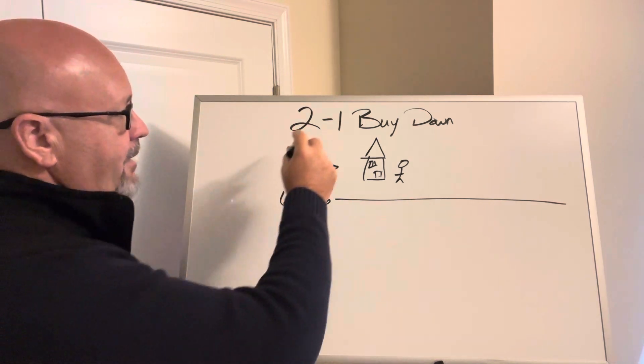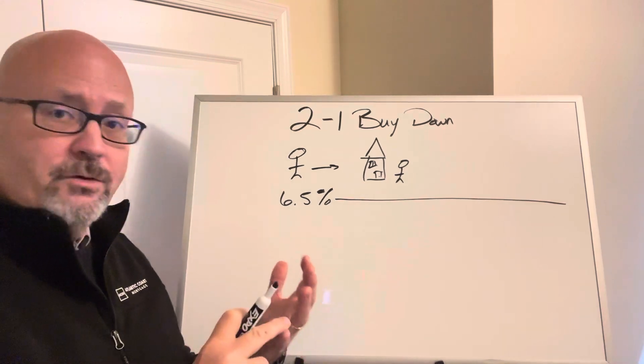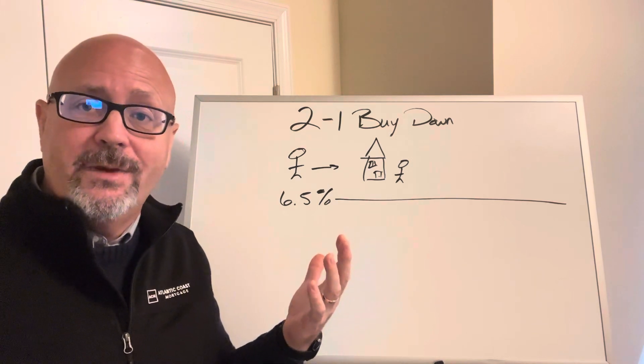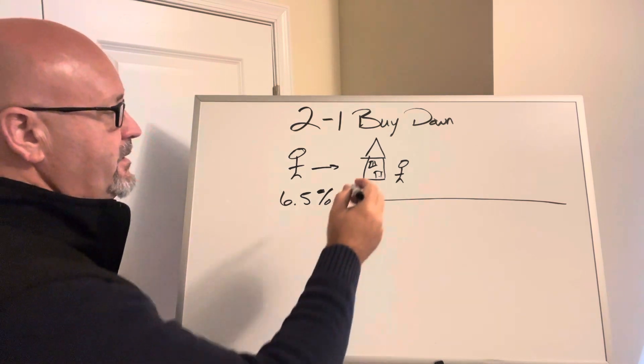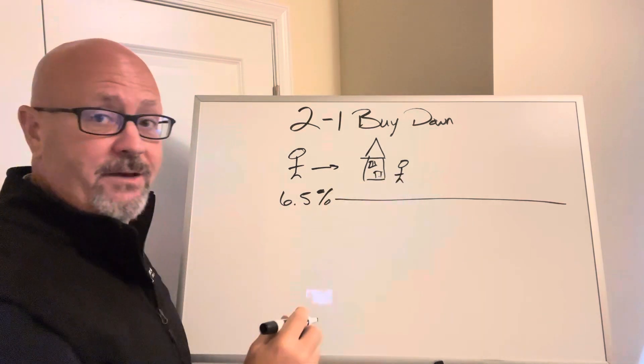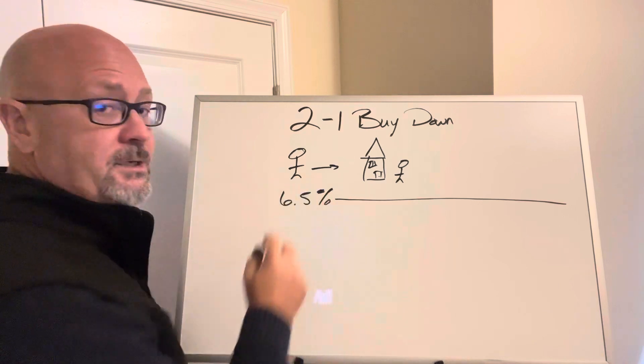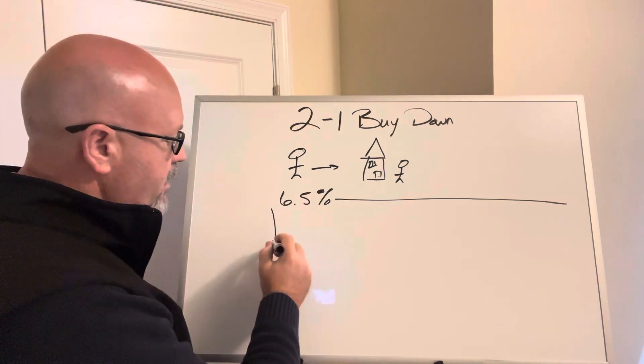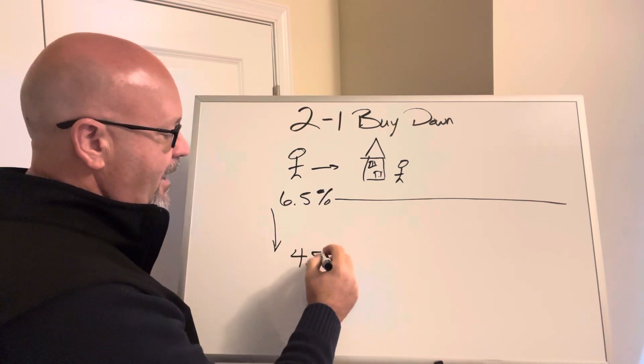With the concept of a 2-1 buy-down, there are some points where this can actually be beneficial both to the seller and also to the purchaser. It's really going to come down to making sure that it works for both parties, because in essence, the seller is going to give a seller concession of some money to help with this buy-down. Theoretically, what we're going to be doing is buying the rate down to 4.5%.